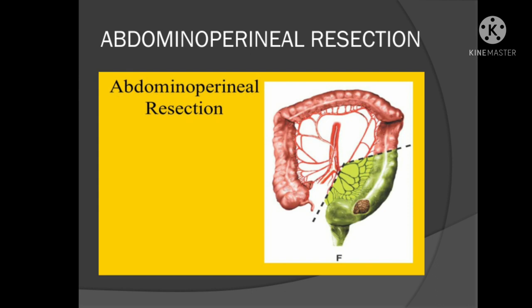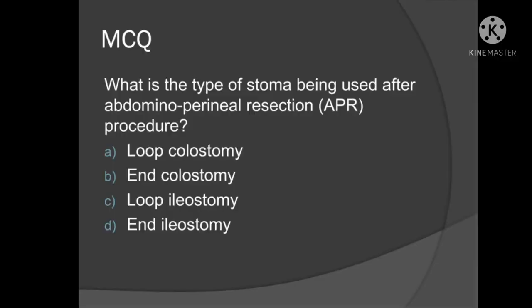Sometimes even Hartmann's procedure can be permanent. Now coming to our first question: when you do an abdominal perineal resection, the whole sigmoid colon, rectum, and anal canal is removed. What is left is only the descending colon, which is brought outside. This is an end colostomy — it is permanent because you don't have a distal anal canal remaining. The patient has to live with this lifelong. This is an example of end colostomy.